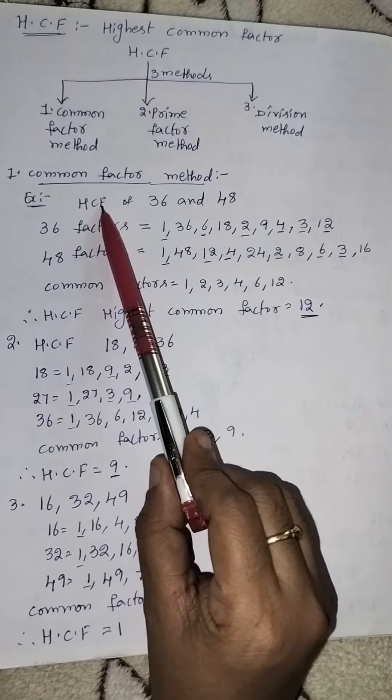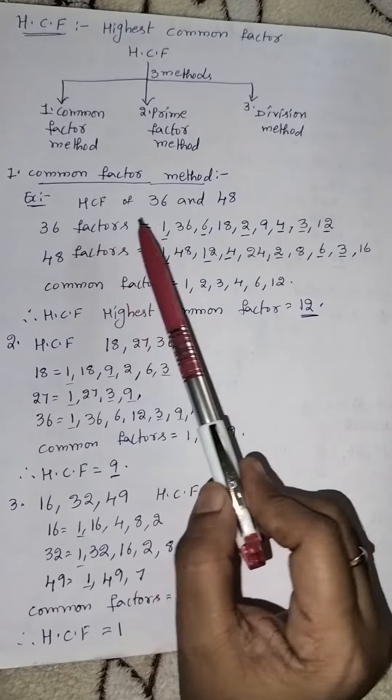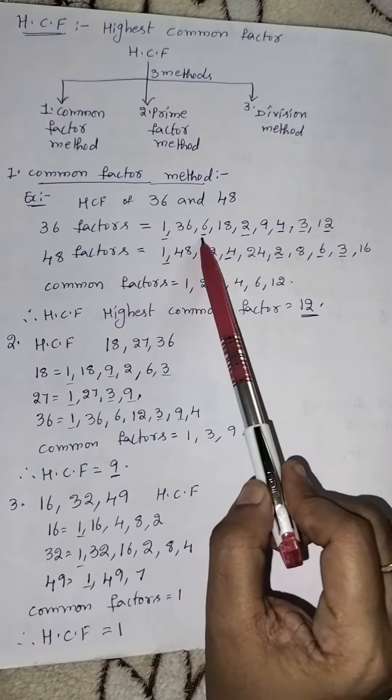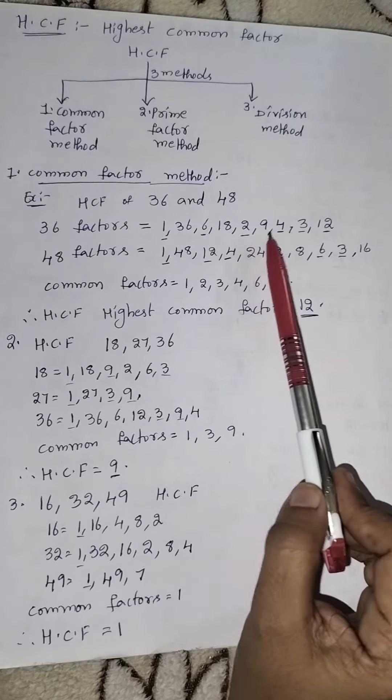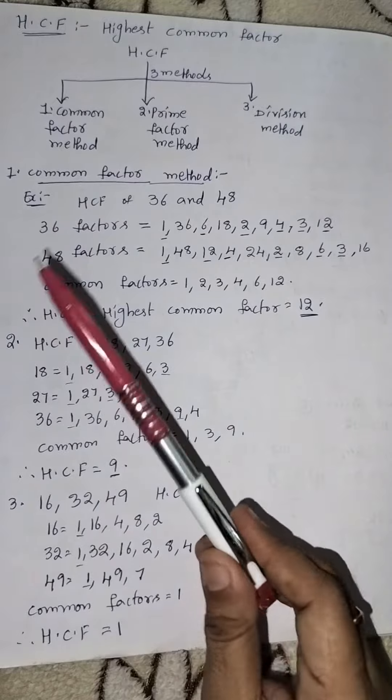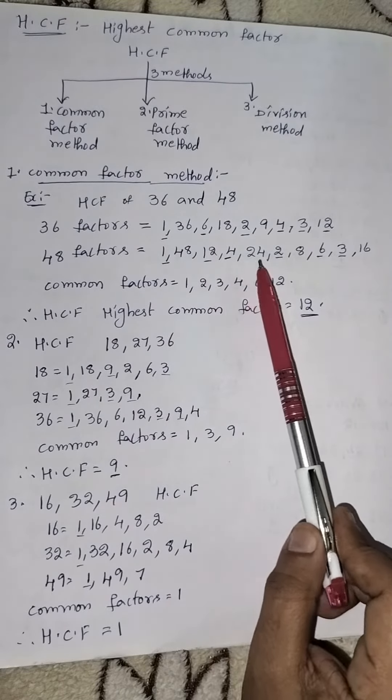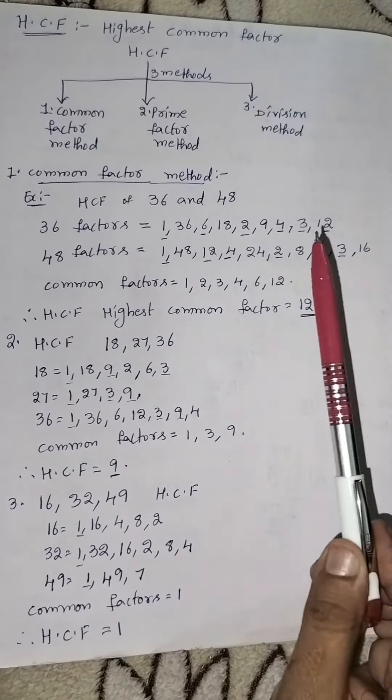First of all we find the factors of 36 and 48. 36 factors are 1, 36, 6, 18, 2, 9, 4, 3, 12. And 48 factors are 1, 48, 12, 4, 24, 2, 8, 6, 3, 16.